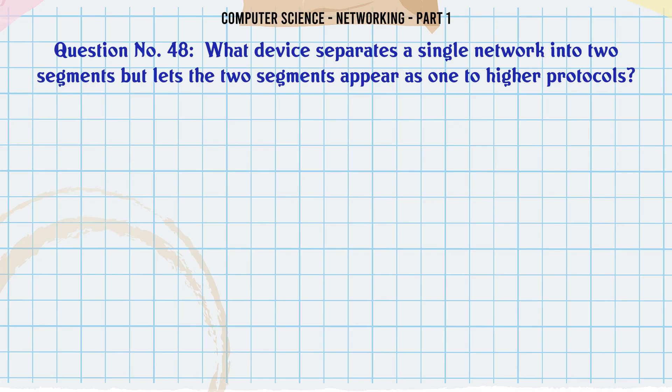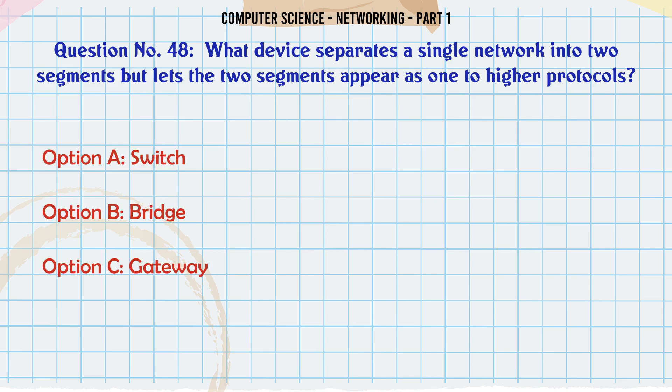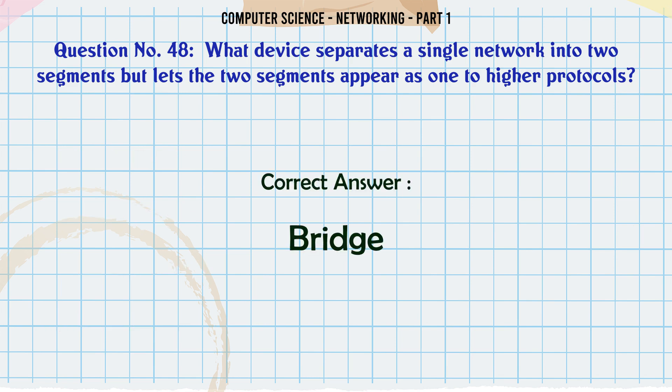What device separates a single network into two segments but lets the two segments appear as one to higher protocols? A. Switch. B. Bridge. C. Gateway. D. Router. The correct answer is: Bridge.